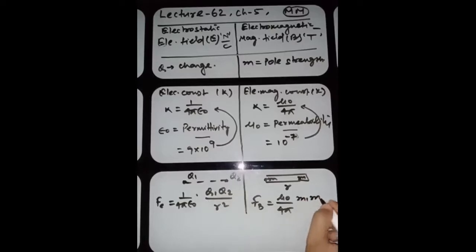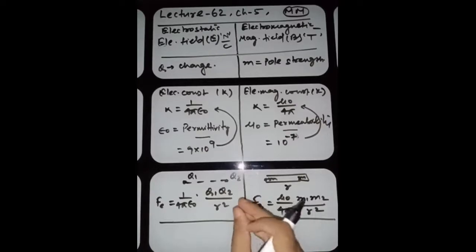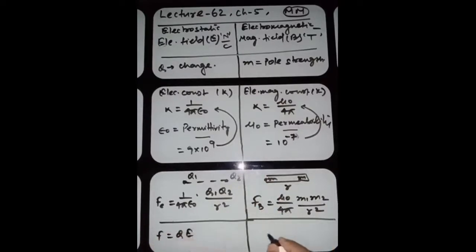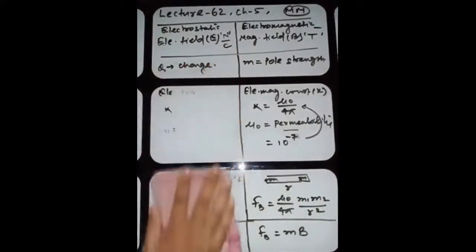In magnetic, the force is mu-naught by 4π times M1 M2 by R-square, where M is pole strength, not mass. If a charge is placed in a uniform electric field it experiences force F = QE. In the magnetic analog, Q is replaced by M and E is replaced by B, giving F = MB. Both topics are very similar through the electrostatic analog.